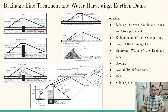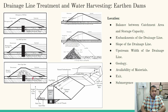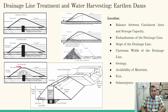There are three types of earthen dams shown in the figure: homogeneous, diaphragm, and core. The type of cross-section selected depends on locally available material and its strength properties.